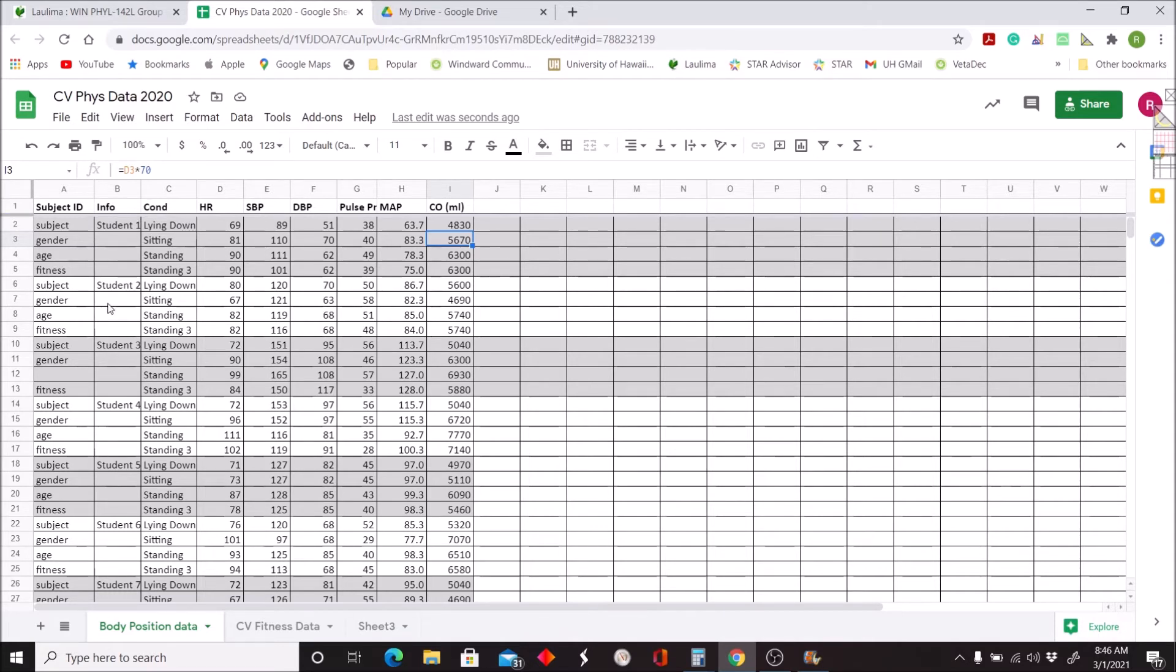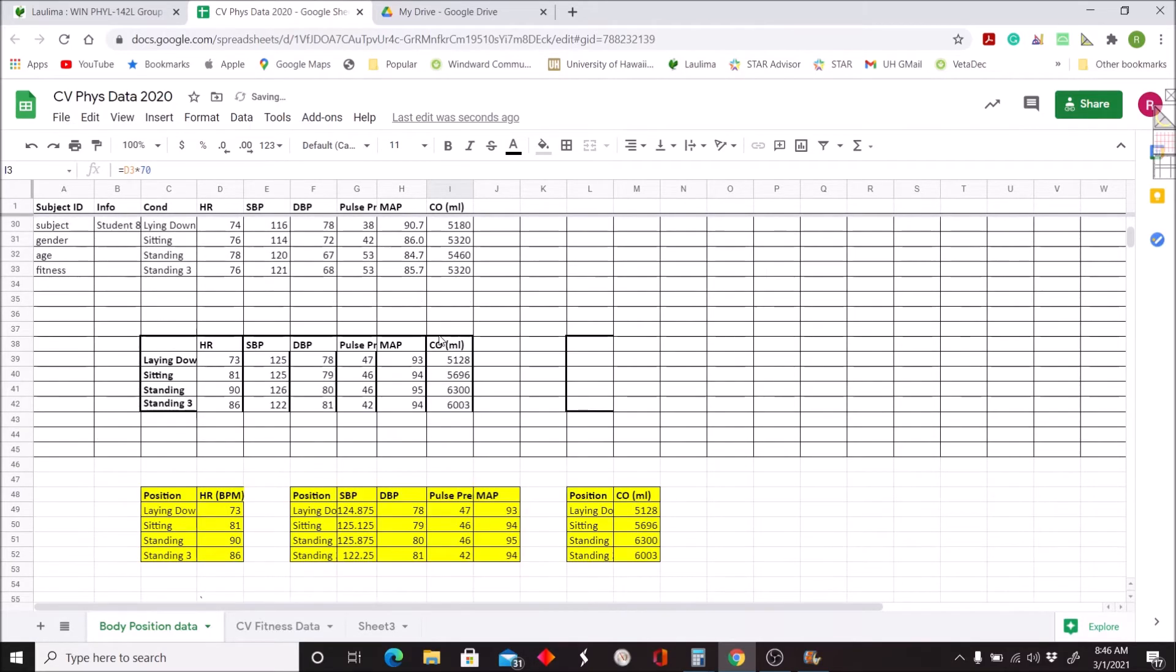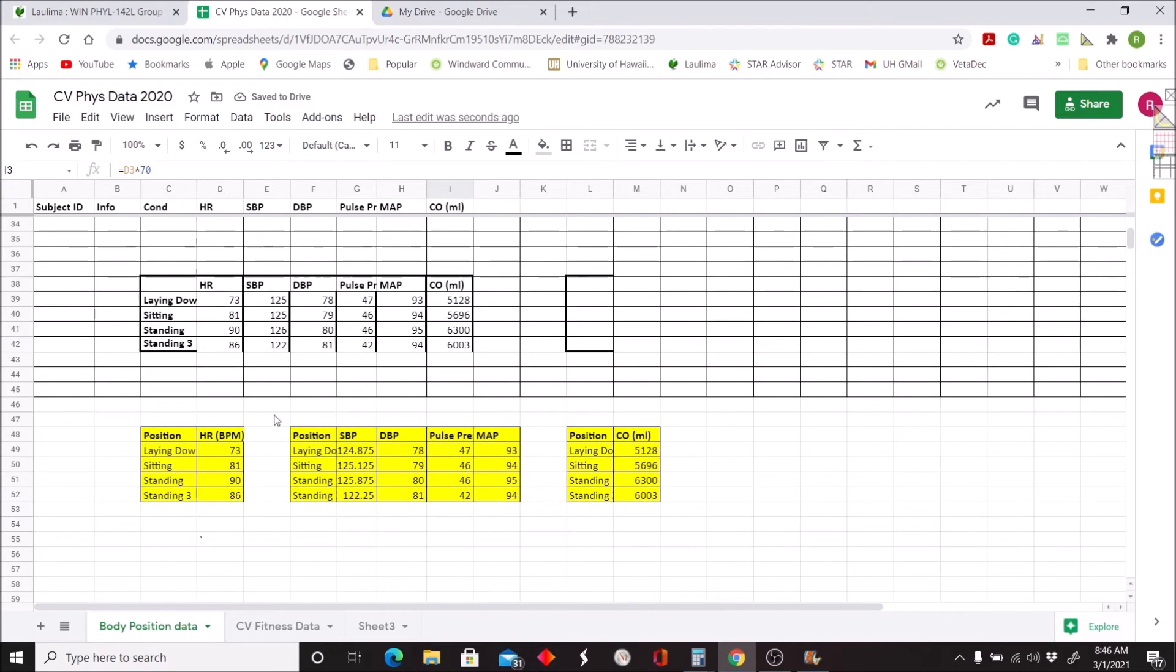Okay. Now once those data are entered for everybody in the class and your instructor, that is me, has let you know, you will see that data down below appear in these yellow tables. The yellow tables are what you are going to graph.